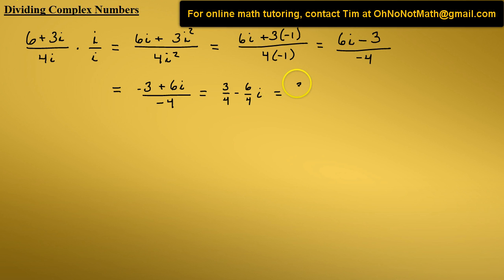So this can reduce to 3 fourths minus 3 over 2 i. That's our final answer.